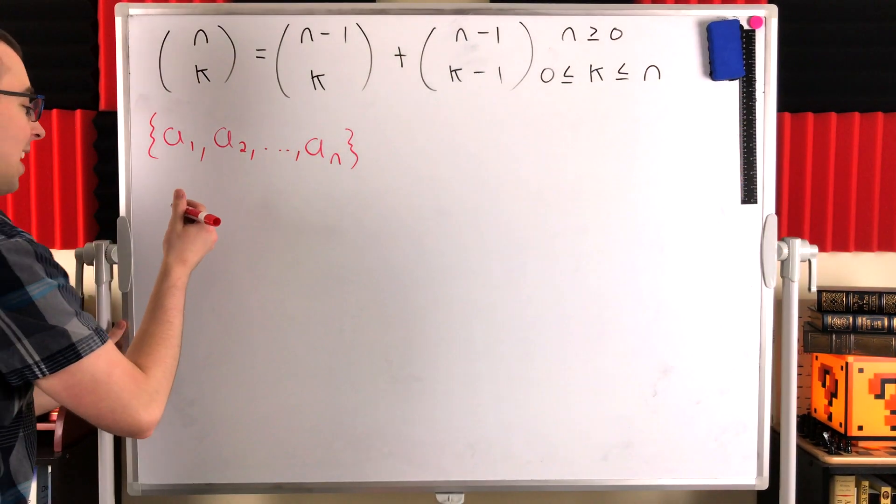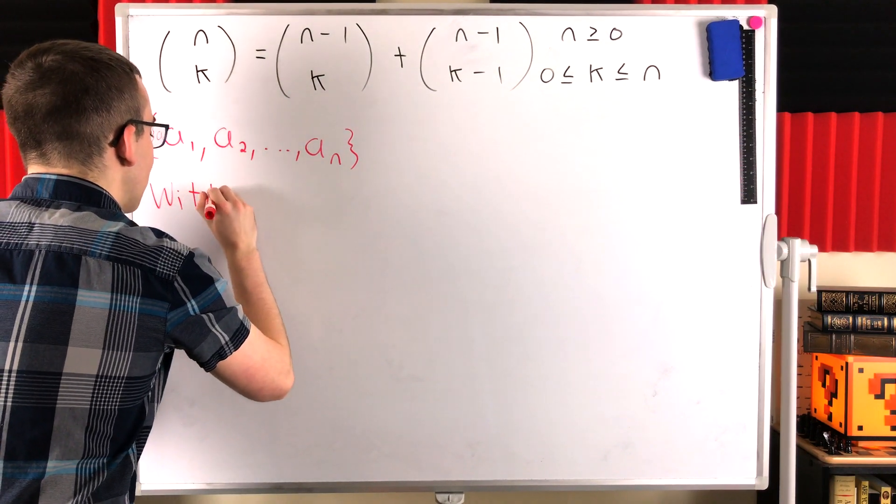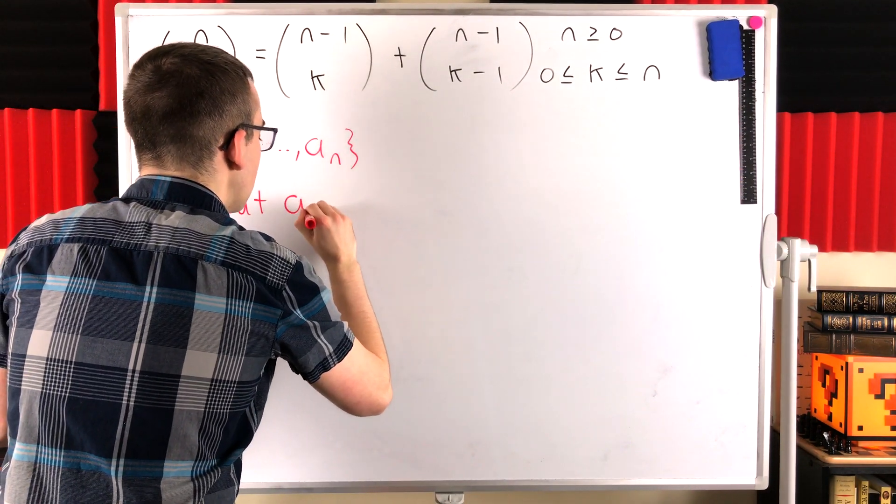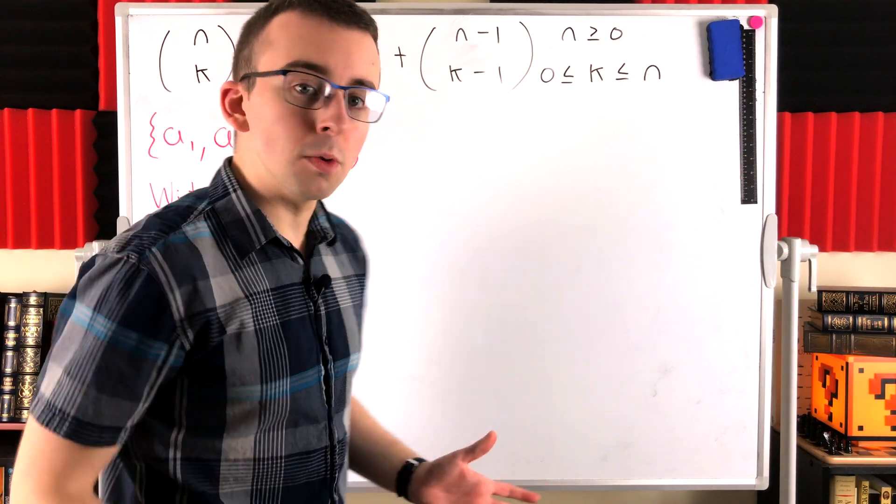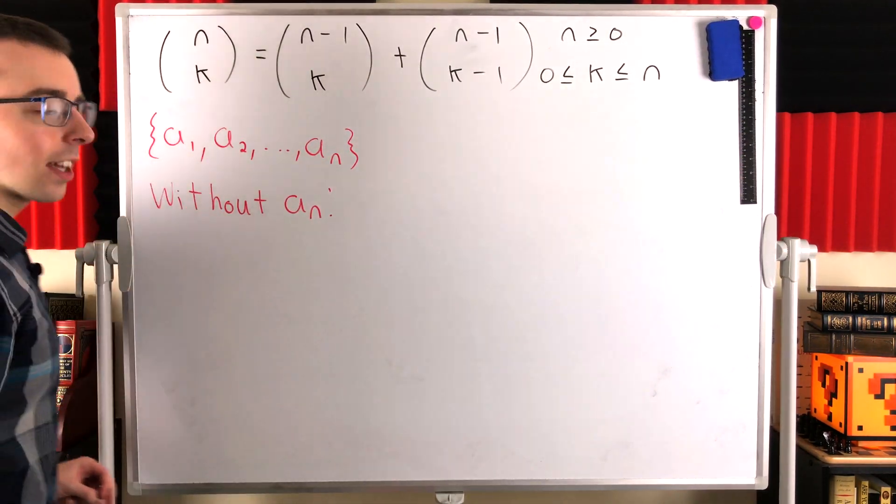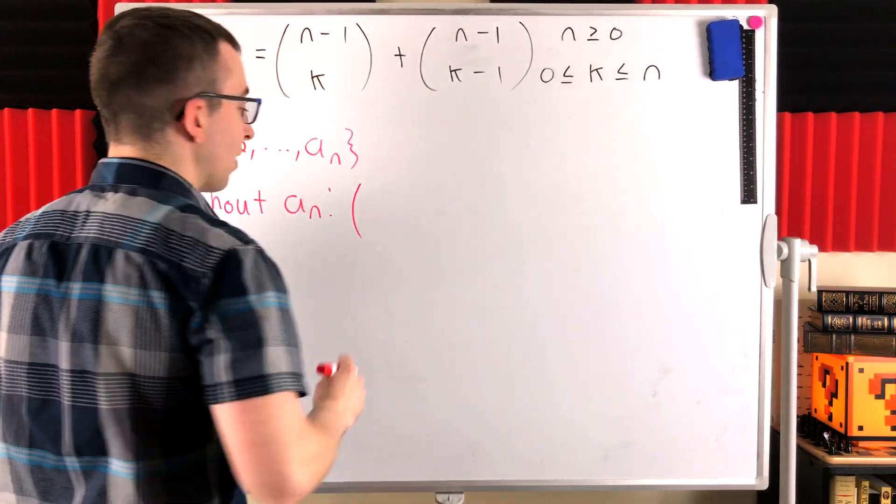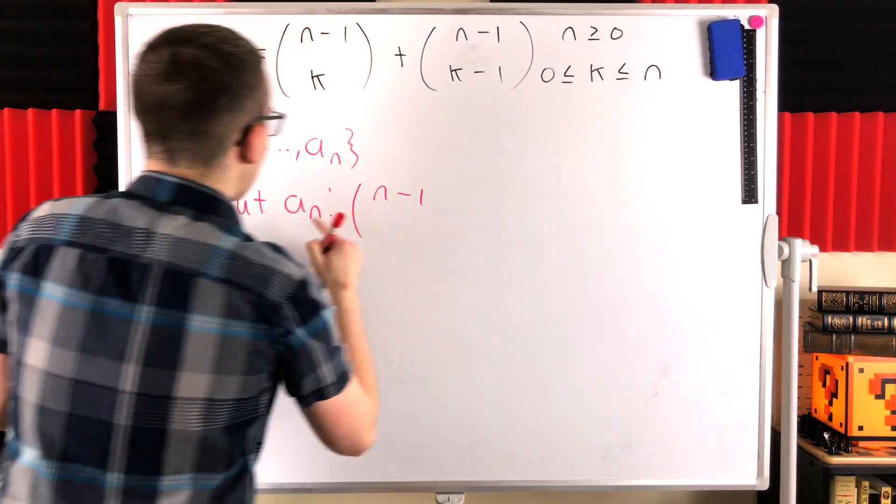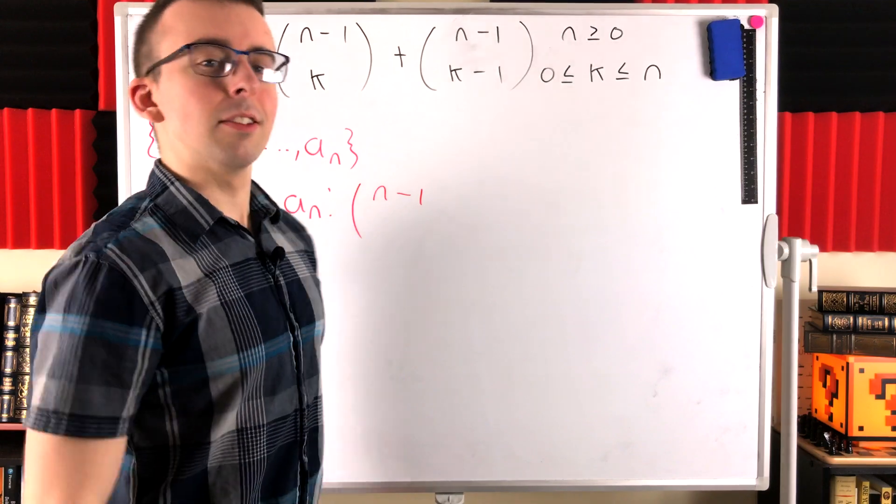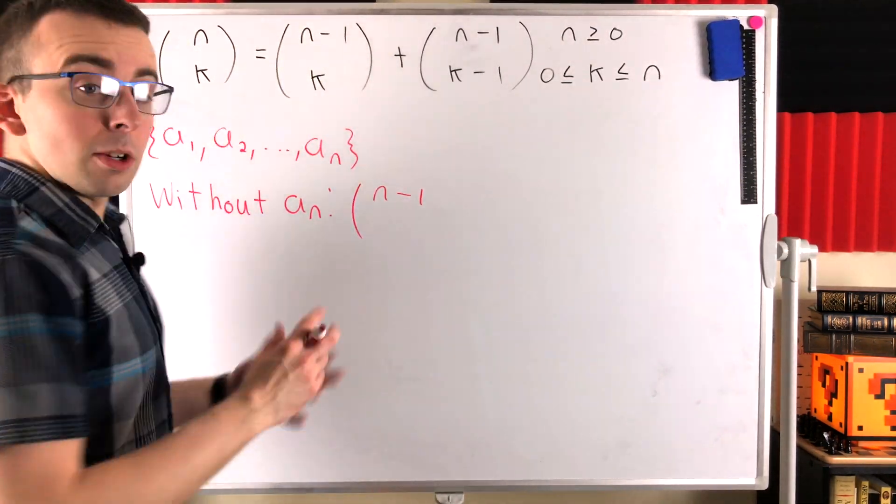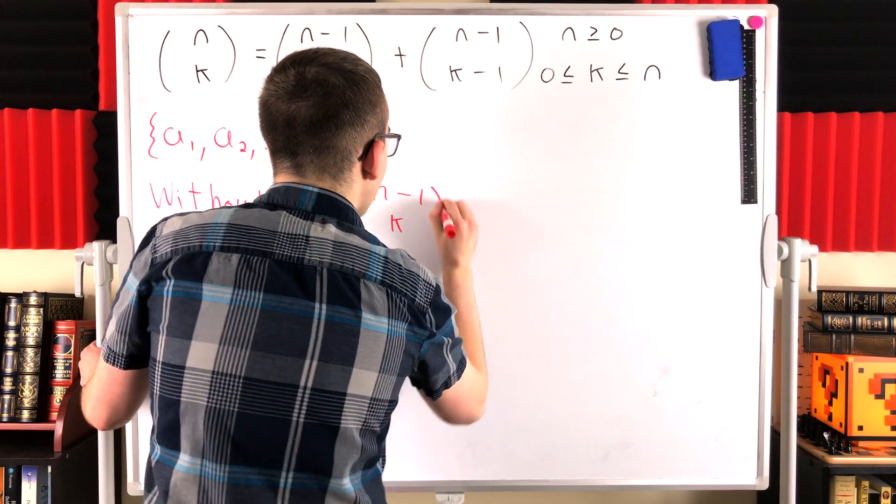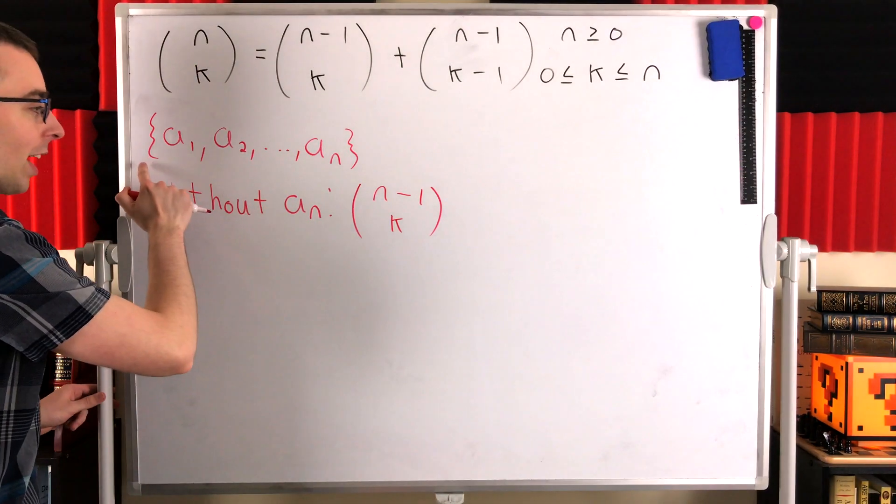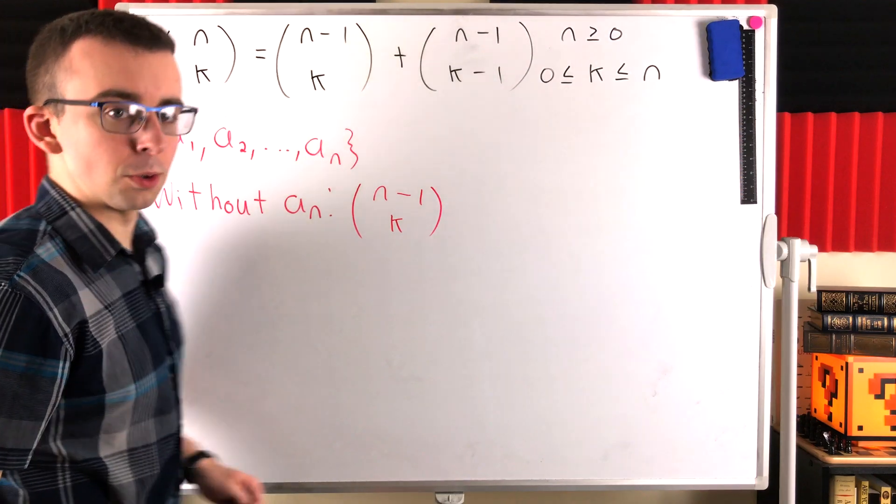Doesn't matter which we choose, we'll fix a_n. So let's first consider the collections of k elements from this n element set that don't include a_n. Okay, so how many ways can we choose k elements from this set if we're not going to include a_n? Well, we have a total of n minus 1 options, right? Because the original set has n options, but we're not going to pick a_n. So we have n minus 1 other elements that we could choose. And then we just have to choose k of them. So the total number of ways we could do that is n minus 1 choose k. Pretty straightforward. So now we have counted all of the collections of k objects from this n element set that don't include a_n.